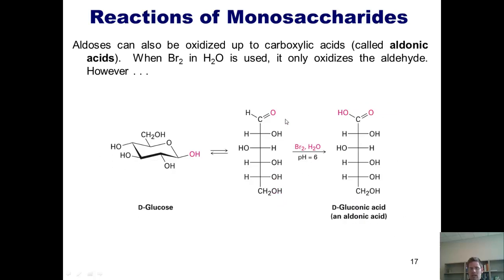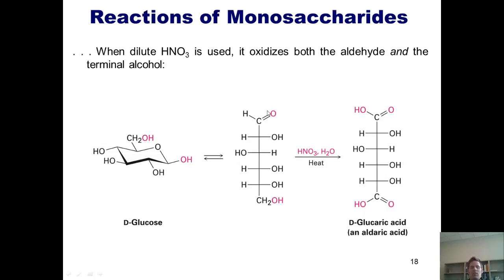Once again, if I take an aldose like this and treat it with bromine and water, it only is powerful enough to oxidize up the aldehyde to the carboxylic acid, and it leaves this primary alcohol at the bottom alone. But if I take the same aldose and treat it with nitric acid and water, it's powerful enough of an oxidizing condition to oxidize up both the aldehyde and the primary alcohol to carboxylic acids.